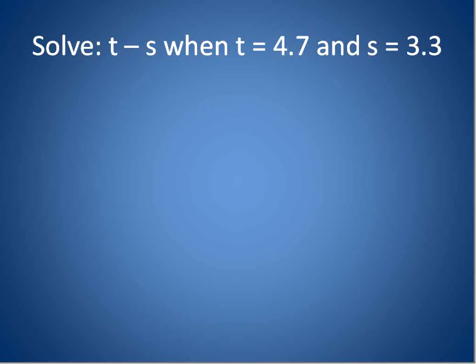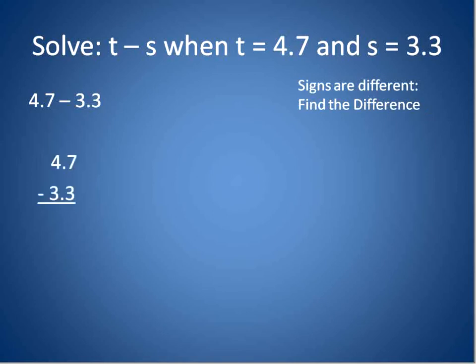Now, we're going to do it with some variables. Solve t minus s when t is 4.7 and s is 3.3. First thing I'm going to do is substitute 4.7 in for t, 3.3 in for s. That gives me 4.7 minus 3.3. The signs are different. I have a positive number and I have a negative number. Positive 4.7 minus 3.3. So, the signs are different. I'm going to find the difference. So, I'll line them up. 4.7 minus 3.3. I'm going to subtract like normal. 7 minus 3 is 4. 4 minus 3 is 1.